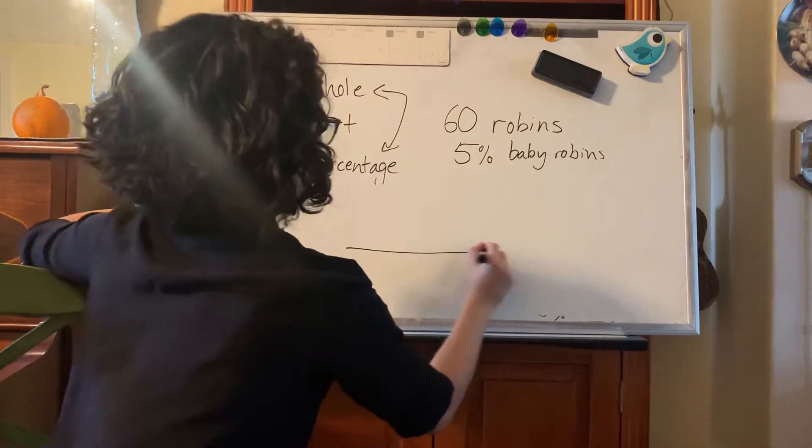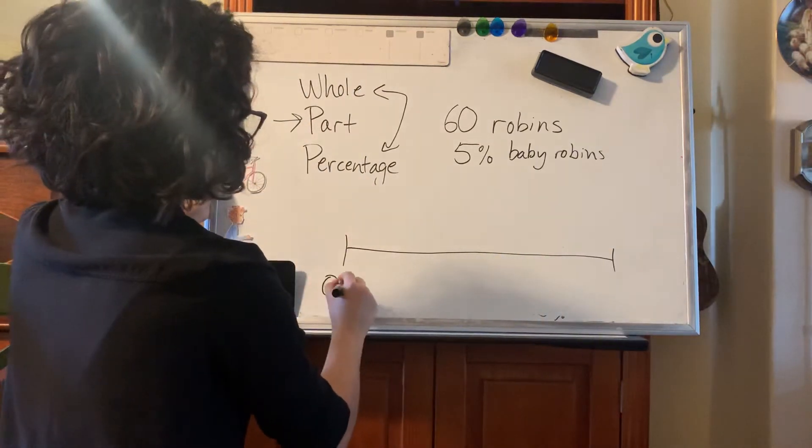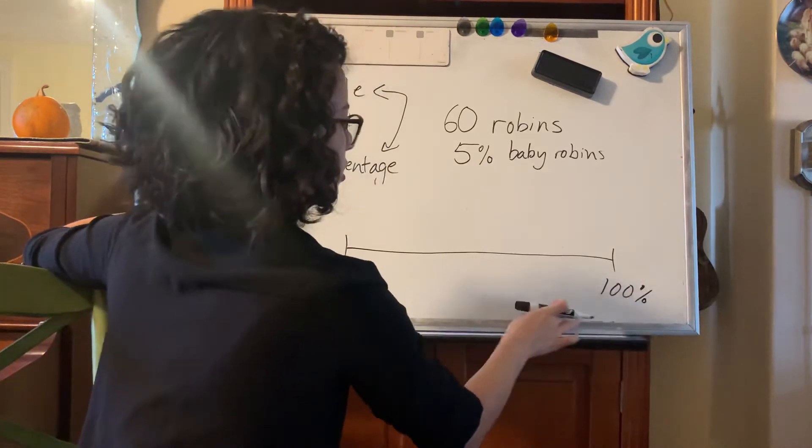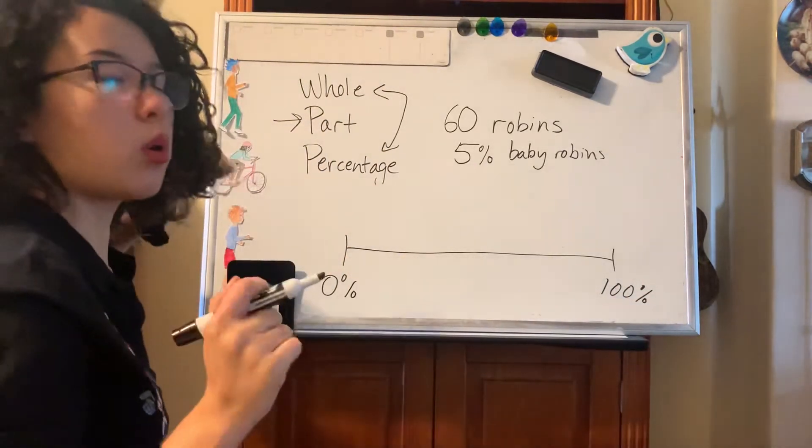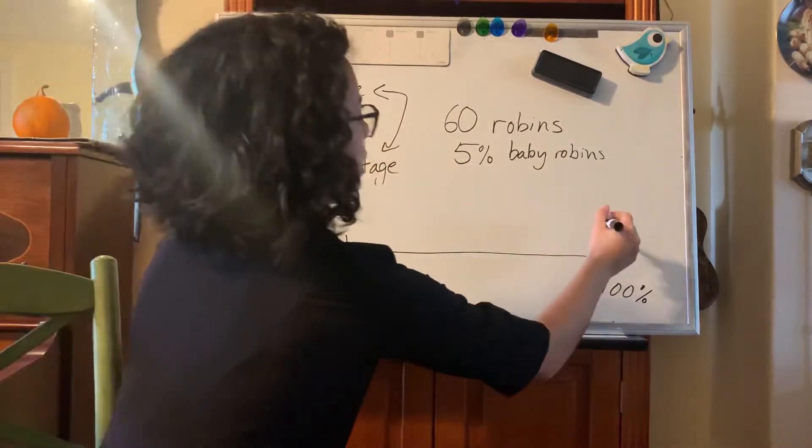So again, we just set up our double number line. Remember the percentage side, we have zero percent to 100 percent. Now do we know what our 100 percent is here? Yes, we know what our whole is and the whole is always equal to 100 percent. That is 60 robins.